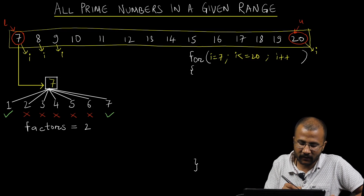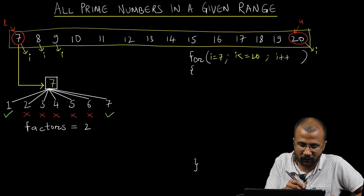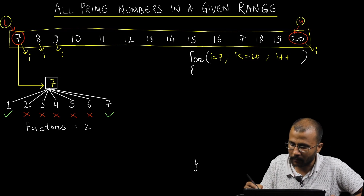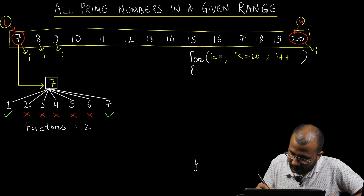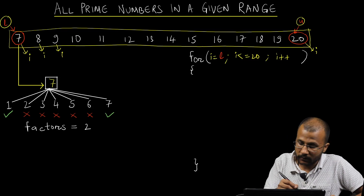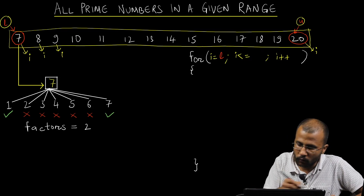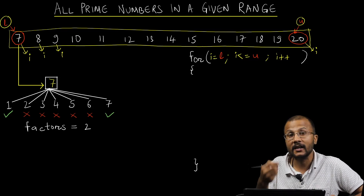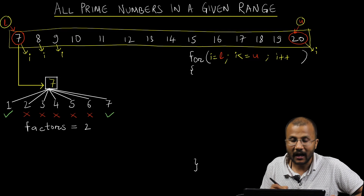Instead of writing 7 and 20, I have already scanned the numbers from the user — L is the lower limit and U is the upper limit. So instead of 7 I write L, and instead of 20 I write U. I am assuming the lower and upper limits are provided by the user. This is my outer loop.